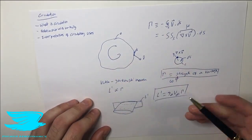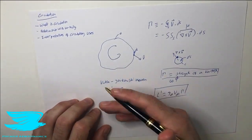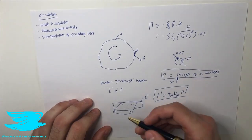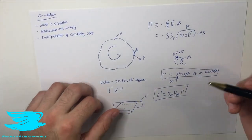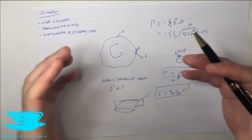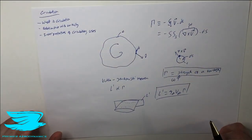If we calculate the circulation around an airfoil, a cross-section of the airfoil, we can then, through the Kutta-Joukowsky theorem, figure out what the lift over this cross-sectional area is. And if we take a lot of cross-sectional areas, we can then integrate it along the airfoil and figure out what the entire lift is across the entire airfoil. That's how powerful circulation is.